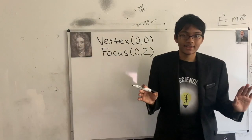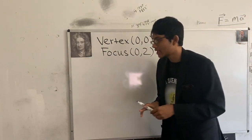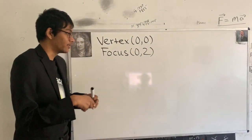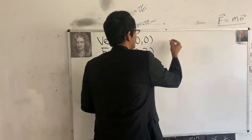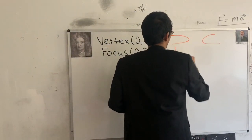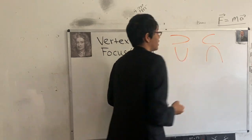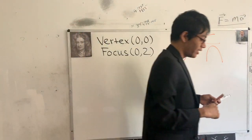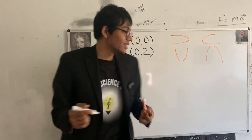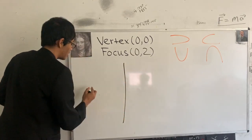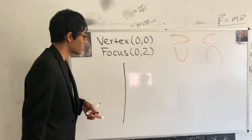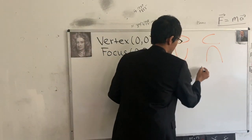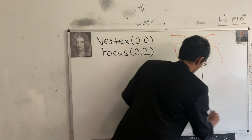What we need to find is the actual equation of the parabola. The first thing we have to do is determine what type of parabola we have. Remember, there are four kinds of parabolas: you can have a left, a right, an up, or a down parabola. The best thing to do is to go ahead and visualize what's actually going on with our parabola.